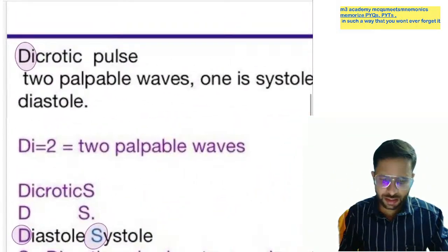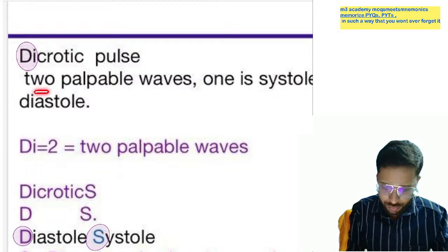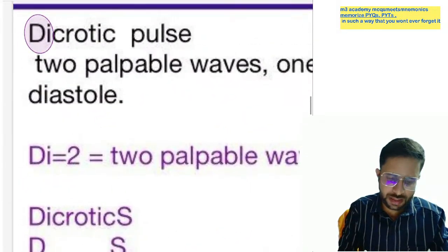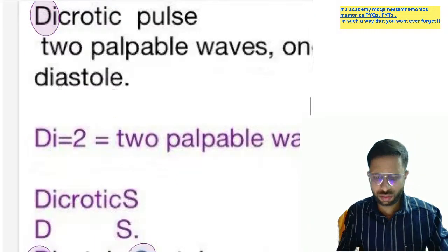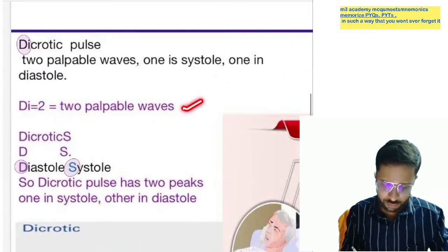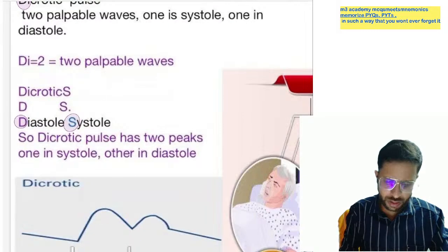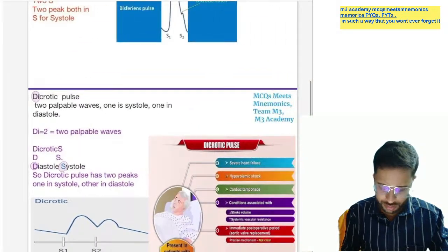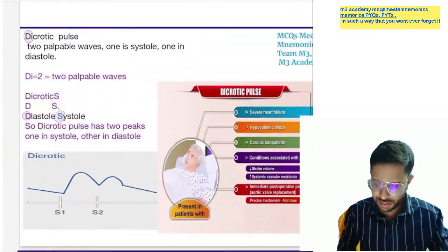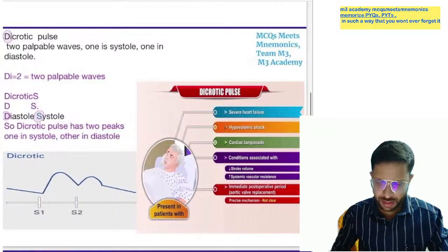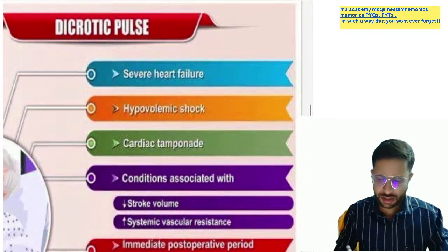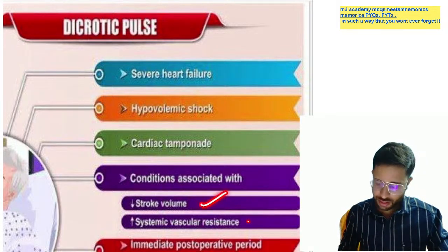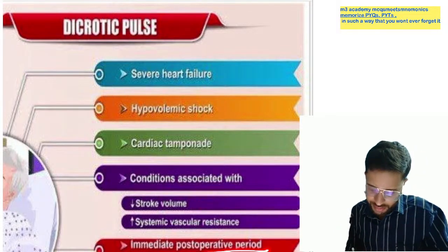Dicrotic pulse — di means two, again two palpable waves: one in systole, one in diastole. Because in the spelling of dicrotic there is D for diastole and also systole — two palpable waves, one in diastole, one in systole. Dicrotic pulses are found in severe conditions like severe heart failure, hypovolemic shock, cardiac tamponade, low stroke volume, increased systemic vascular resistance, and the immediate post-operative period.